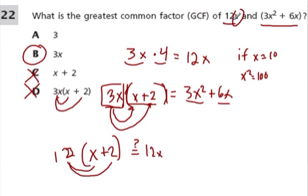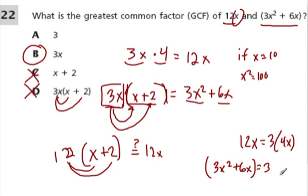And 3 does go into both numbers. For example, 12x, you can think of that as 3 times 4x. Sure, it's a factor. And 3x² + 6x, you can think of that as 3 times (x² + 2x). Because 3 times x² is 3x², and 3 times 2x is 6x. Those are factors, but they're not the greatest common factor.